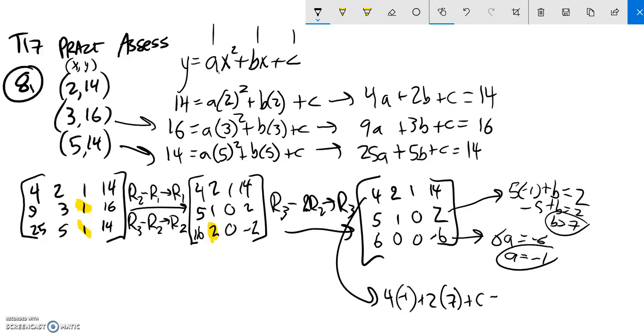So negative 4 plus 14, plus C is 14. I'm going to add these things together. Negative 4 plus 14 is 10. So C must be 4.